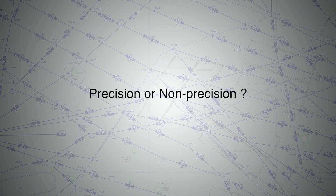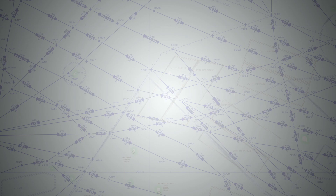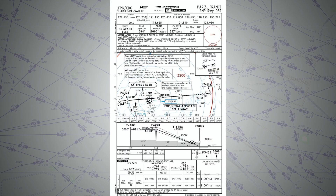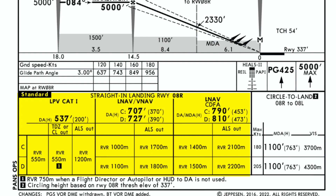Let's look at the RNP approach now, and here is where it gets a bit confusing. Is it precision or non-precision? Well, it is not straightforward. Because if we look at this approach for example, we can see that under the RNP approach, there are multiple approaches we can choose from. LPAV for example, being localized performance with vertical guidance, is an APV approach — approaches with vertical guidance — which if you want to fly, you must have an SBAS receiver on board. For more in-depth explanations about SBAS, please check out the link above to a video where I explained all about it. APV, or approaches with vertical guidance, is a new category in addition to the regular precision or non-precision categories.